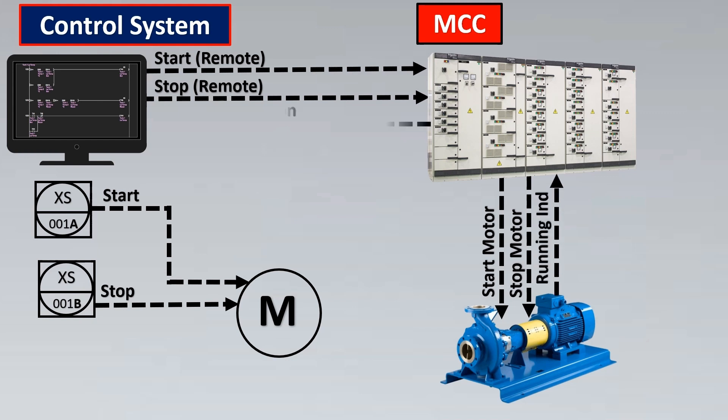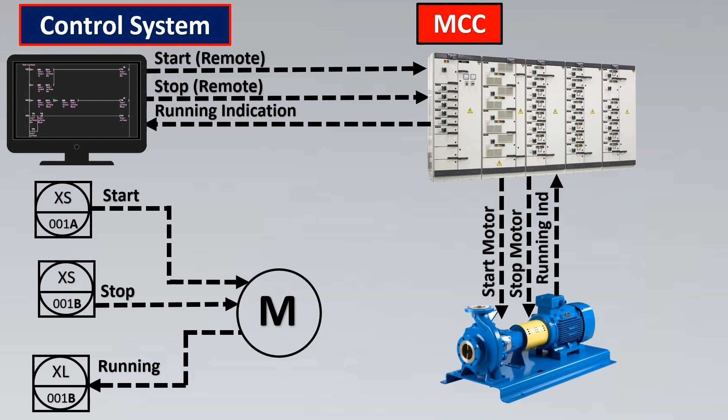The running indication comes from the pump, goes to MCC, from MCC to control system. This is shown like this. You can see the arrow here is going towards the control system because this signal is coming towards the control system.